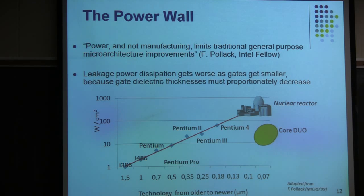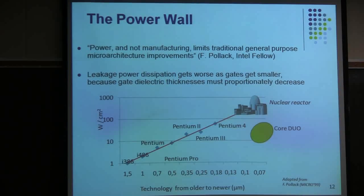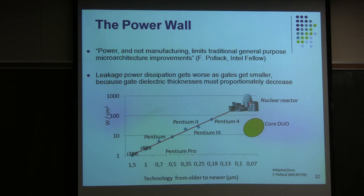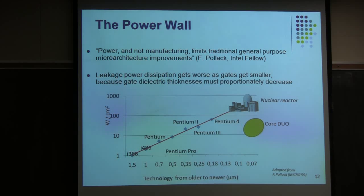Moving on from the memory wall to the power wall — some of you here are nuclear engineers — there is a trend where, as the dimension of the transistor gets smaller and smaller, power gets dissipated. It turns out the amount of power is proportional to the square of the frequency. So at some point, per unit area, you dissipate an amount of energy pretty much like a nuclear reactor. Unless you go through heroic measures of cooling the chip down, you are basically melting it down.